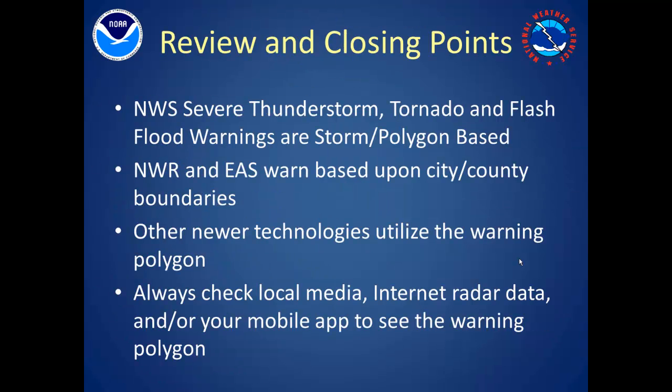To review: short-fused National Weather Service warnings are storm- or polygon-based. Some warning technologies utilize the polygon boundaries to determine who will or will not receive the warning, while other methods such as NOAA Weather Radio and the Emergency Alert System warn on a city or county boundary basis. Unfortunately, there's no simple solution to this dilemma. For any tornado, severe thunderstorm, or flash flood warning you receive, it's always best to check local TV, internet radar data, or your mobile app to determine whether the warning polygon includes your location. Thank you for your time, and I hope you have a better understanding of National Weather Service short-fused warnings and how they're disseminated to the public.